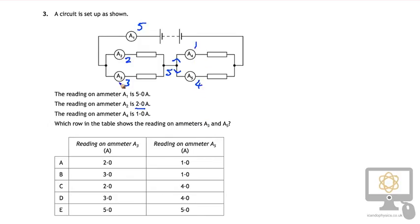And so therefore, the current in A3 is three, which is either B or D, and so we've eliminated the other ones. And then the current in A5 is four, which means the answer must be D. So there we go.